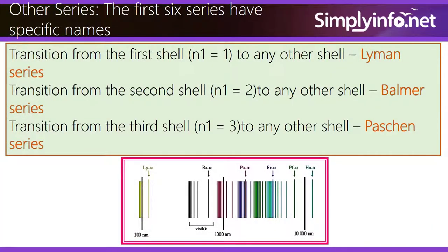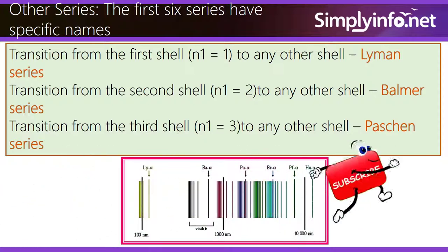Other series: The first six series have specific names. Transition from the first shell, N1 equals 1, to any other shell is the Lyman series. Transition from the second shell, N1 equals 2, to any other shell is the Balmer series.